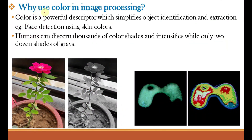The first question is: why do we use color in image processing? The use of color in image processing is motivated by two principal factors. Number one, color is a powerful descriptor which simplifies object identification and extraction — for example, face detection using skin colors. Number two, humans can discern thousands of color shades and intensities, while only two dozen shades of gray.